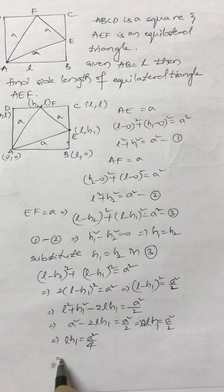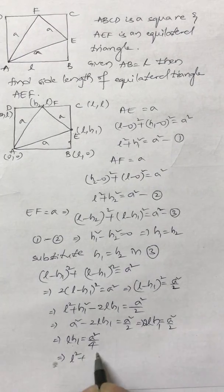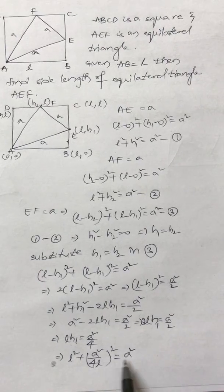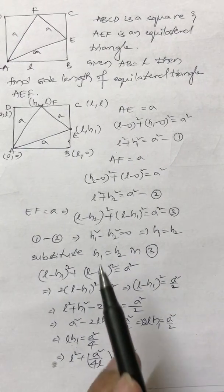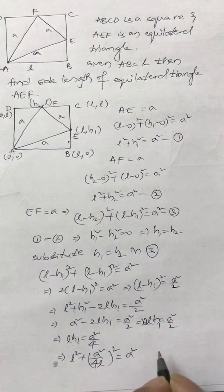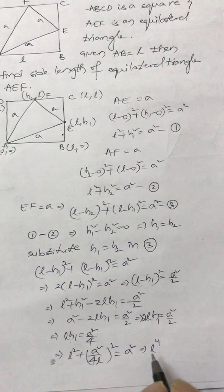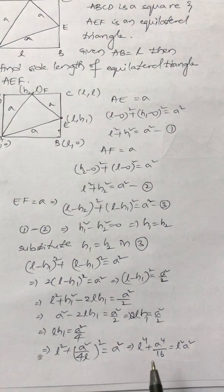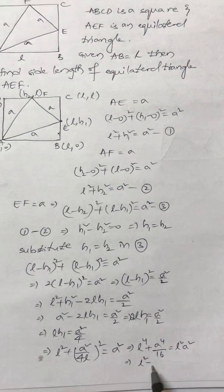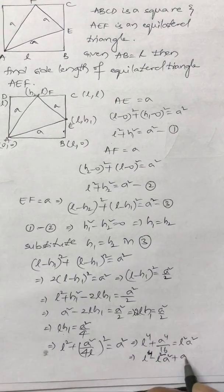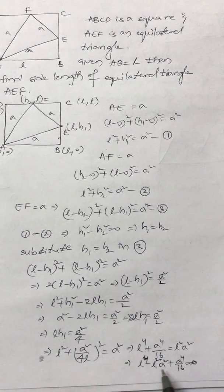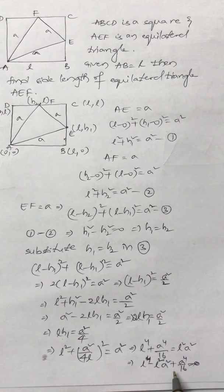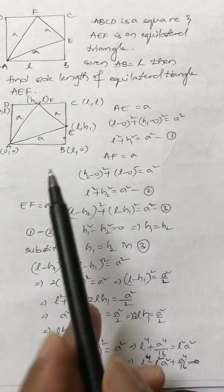So h1 = a²/(4l). Substituting into equation 1: l² + (a²/(4l))² = a². This gives l⁴ + a⁴/16 = l²·a². This is a quadratic in a². Rearranging: l⁴ − l²·a² + a⁴/16 = 0. Solving this quadratic equation will give us a direct relation between the side length a and l.